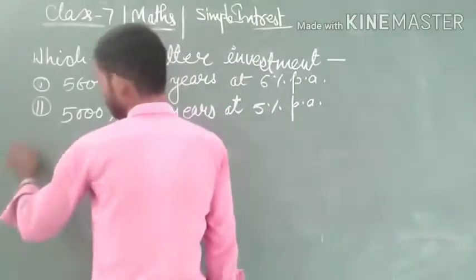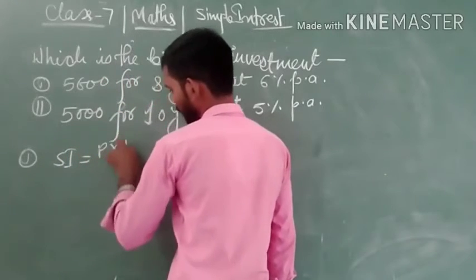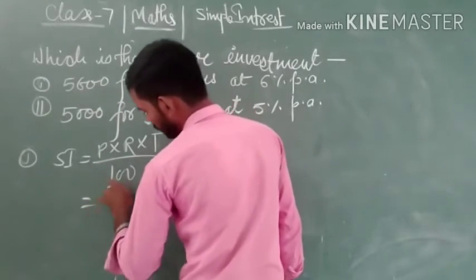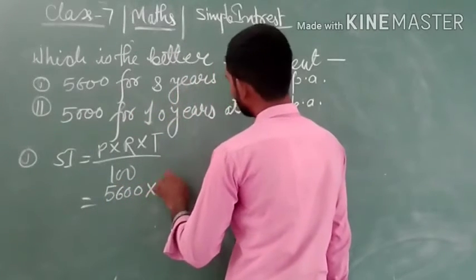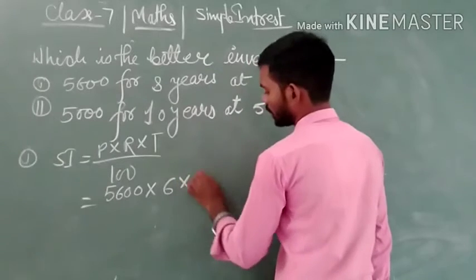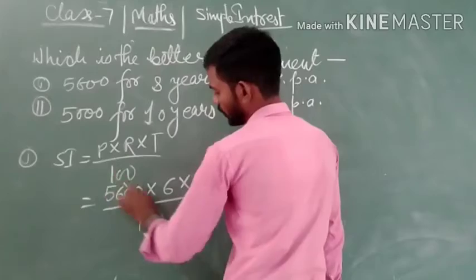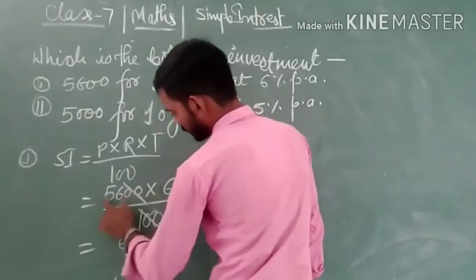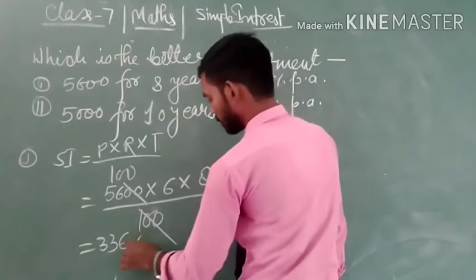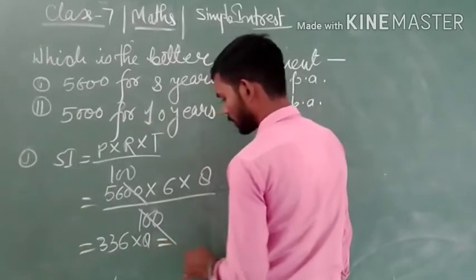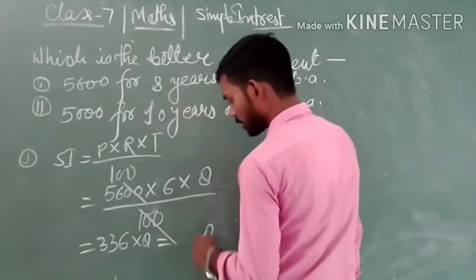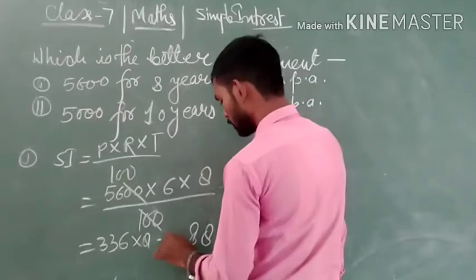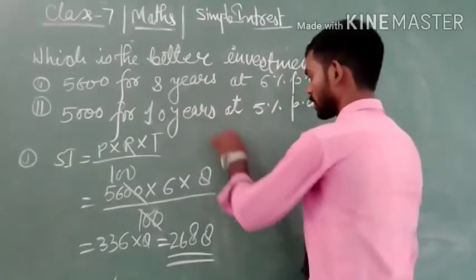So let us find the first case. We know that SI equals P multiplied by R multiplied by T upon 100. So P is 5,600, R is 6, and T is 8, upon 100. Calculating: 5,600 multiplied by 6 is 33,600, multiplied by 8 gives 2,68,800, divided by 100. So the interest in the first case is 2,688 rupees.